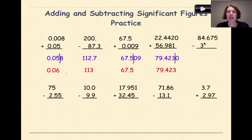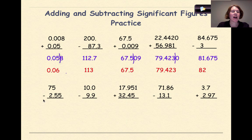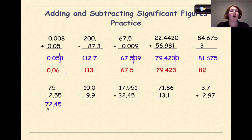Next example: 84.675 minus 0.3. If we subtract this, we get 84.375. In this situation we're only going to the ones position, so we take the 3, round it up, and get 84.4. Then 75 minus 2.55. If we put that into our calculator, we get 72.45. The 75 only goes to the ones position, so we get 72.